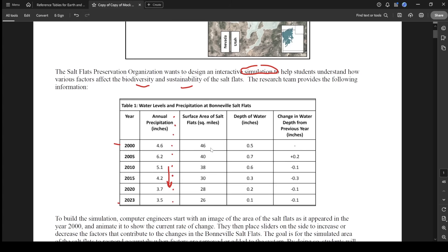As you could see, the rain amount is going generally down. Just marking this up and then the surface area of the salt flat is going down. So that's bad. It's shrinking. The depth of the water in the area is dropping. And then the change in water depth from the previous year is going down by tenths of an inch.